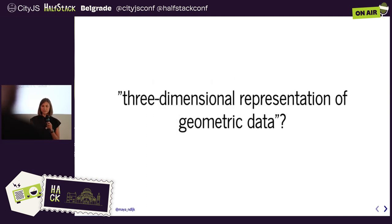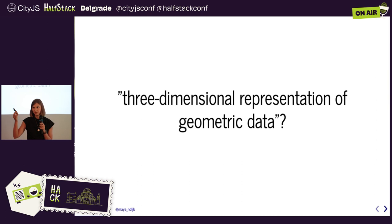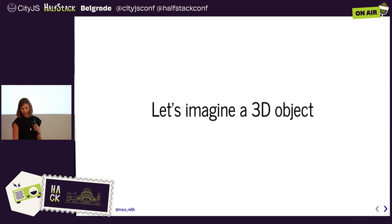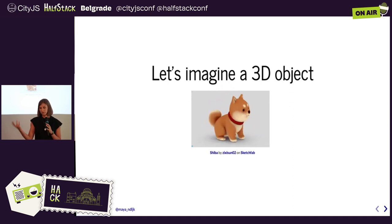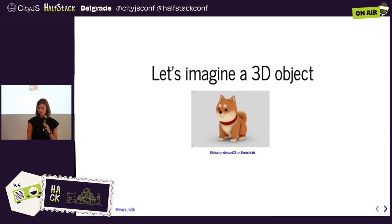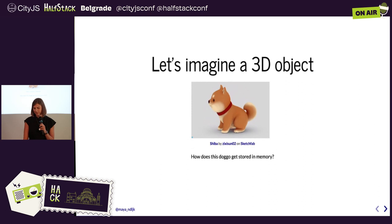What is a three-dimensional representation of geometric data? As developers, we're already thinking about how to represent this in data — data is bytes, ones and zeros. If I have a 3D object, how does that get stored into ones and zeros? To answer that, let's imagine a 3D object — here I have a really cute model of a Shiba Inu that's clearly 3D, and we want to know how that doggo gets stored in memory.